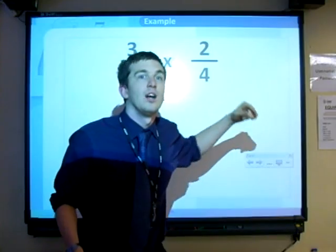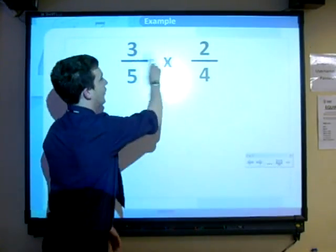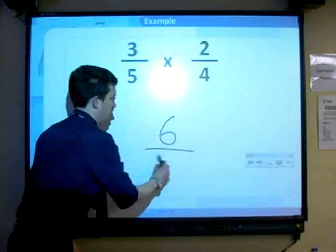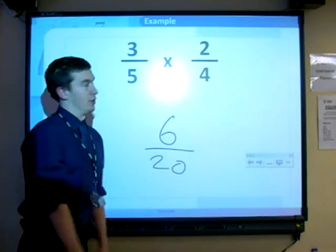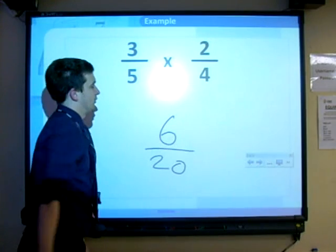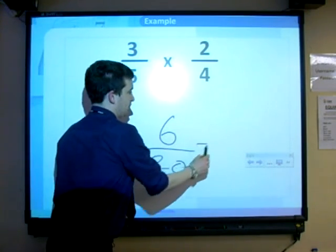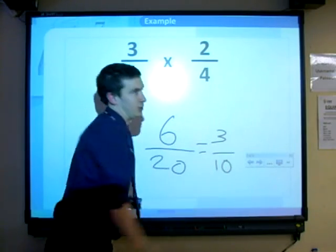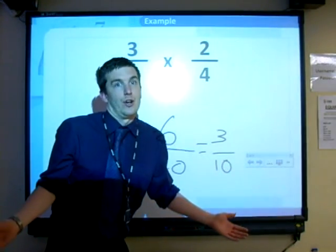Times the top, times the bottom, right? 3 times 2, 6. 5 times 4, 20. Done. Yeah, 3 times 2, 5 times 4, done. Simplify it. 2 goes into both. 2 goes in 3 times, 2 goes in 10 times. Hello, we're done. Alright, easy.